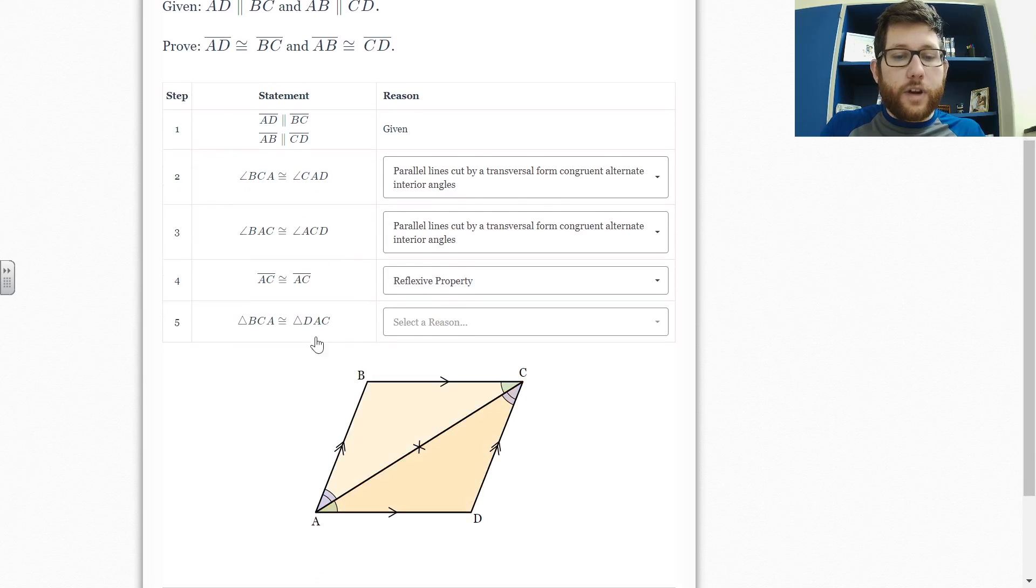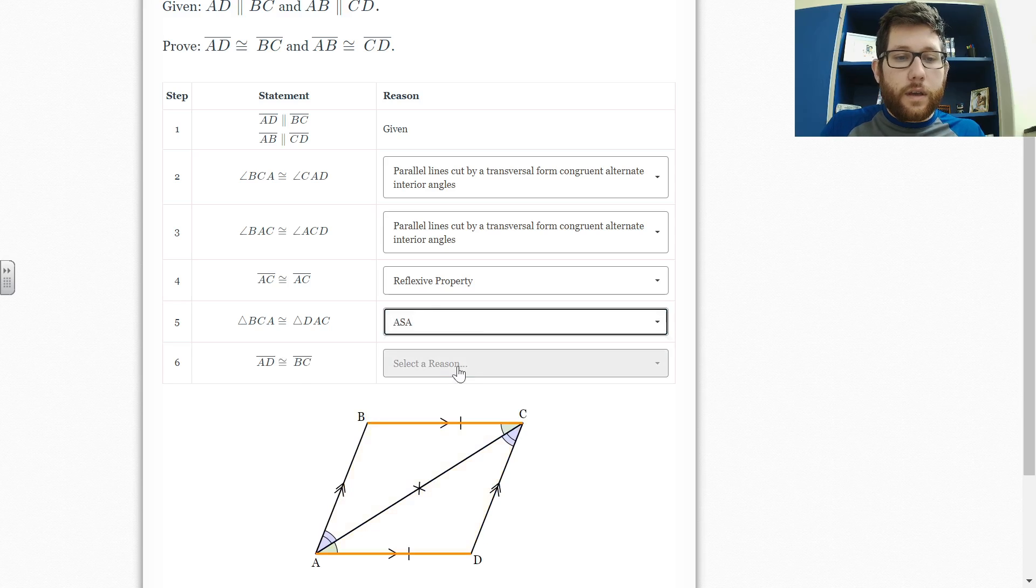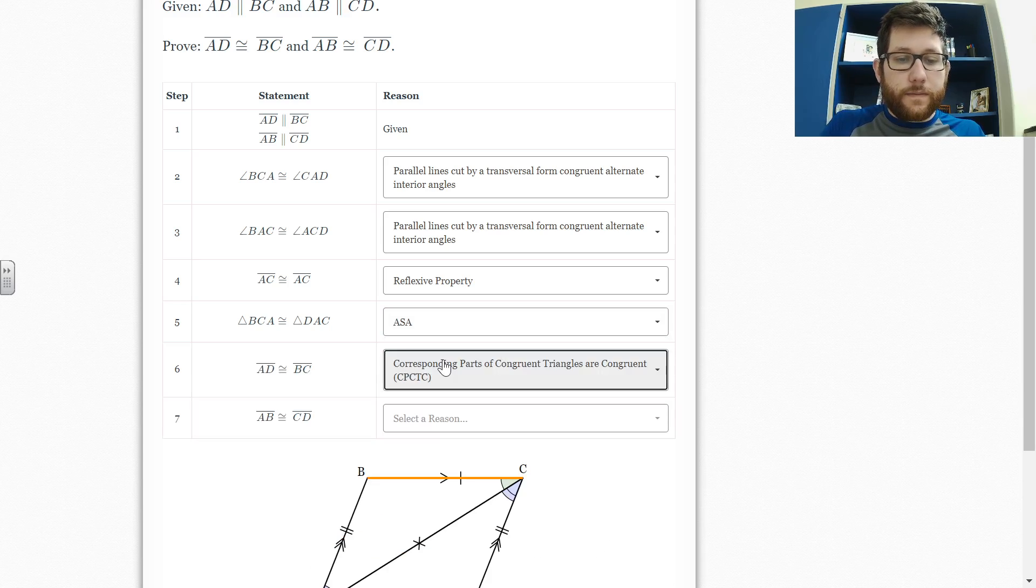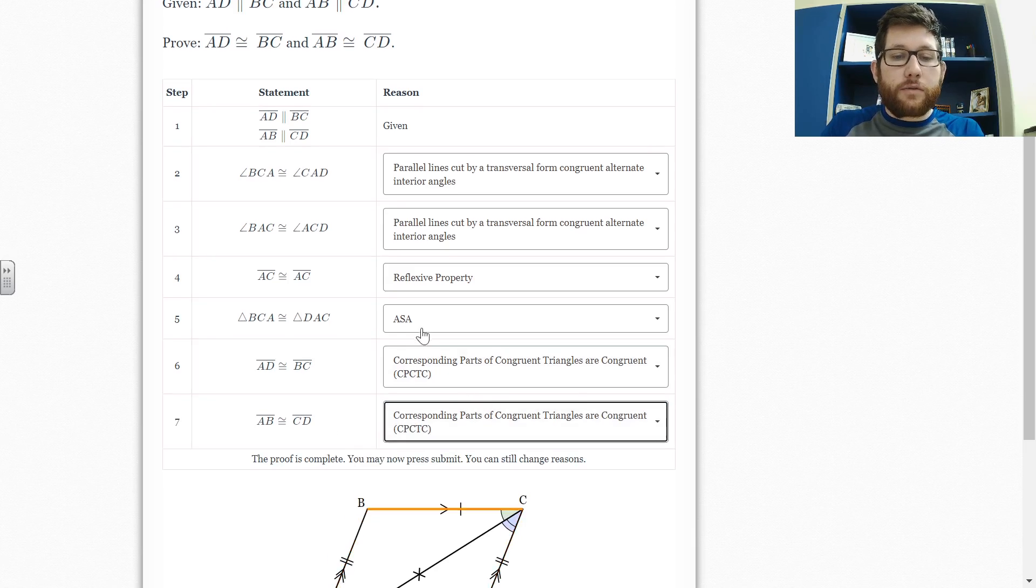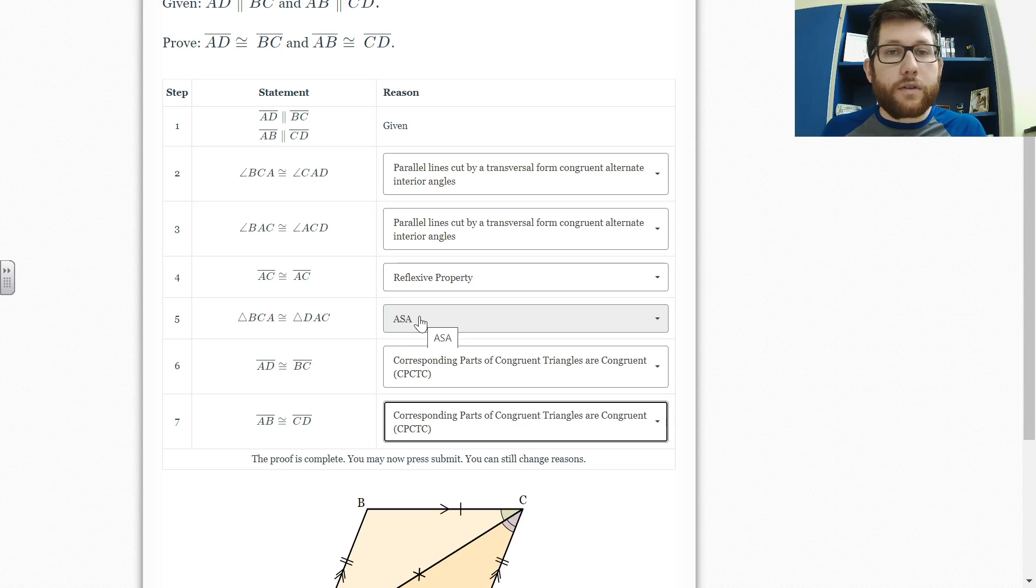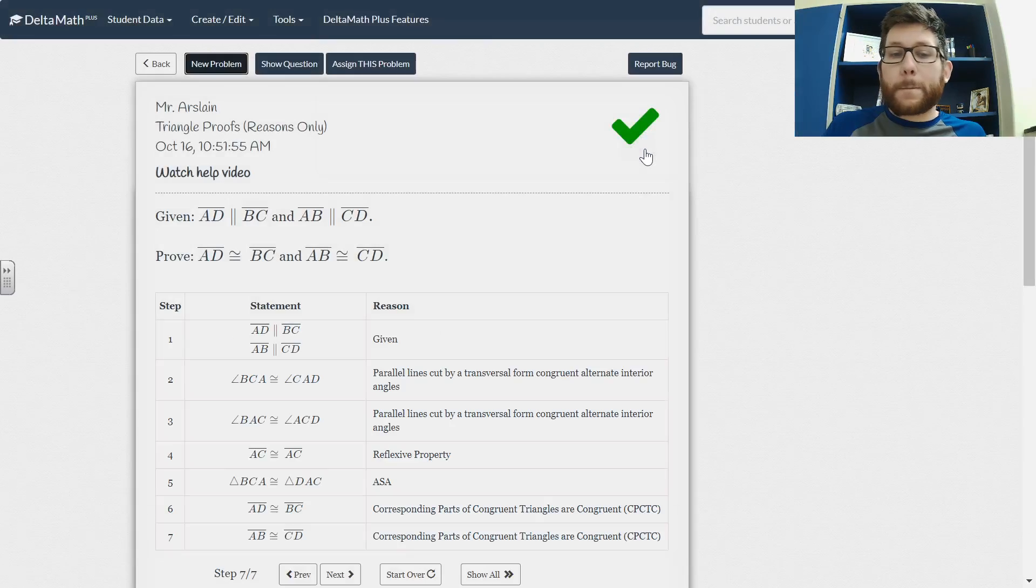Why do I know AC is congruent to AC? That's reflexive. And then the triangles are congruent. I have angle, side, angle. So angle, side, angle. And then how do I know the additional pieces are congruent? That would be by CPCTC and also CPCTC. Now remember, you can't use CPCTC until we prove a triangle congruent. Now sometimes the triangle being congruent to another triangle is given to us. At that point, you're going to have to use CPCTC from the beginning. But we only use it after we've proved at least one set of triangles congruent. And I can submit this answer.